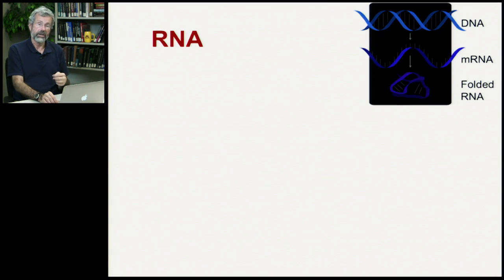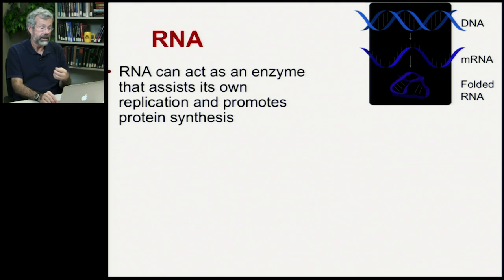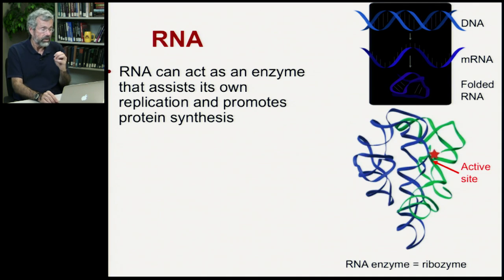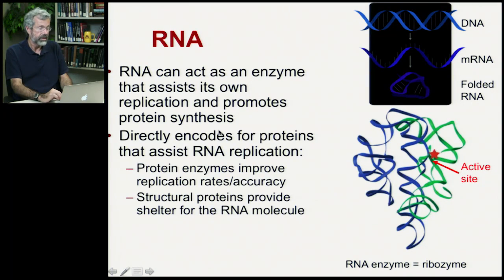We start with RNA because it has a lot of very special properties. RNA can act as an enzyme that assists in its own replication and promoting protein synthesis. So, here we have an RNA enzyme. It's a ribozyme. This is actually RNA, but it acts like an enzyme, so it can actually do stuff with other compounds.